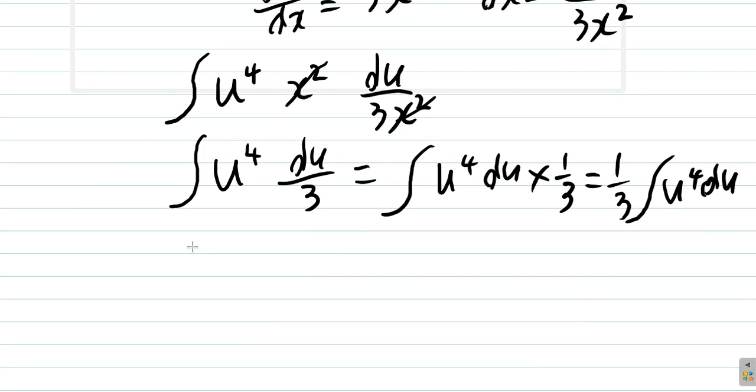So what you have now is 1 third times u to the 5 over 5 plus c. You see that? Same thing now as 1 over 15, u to the 5 plus c.